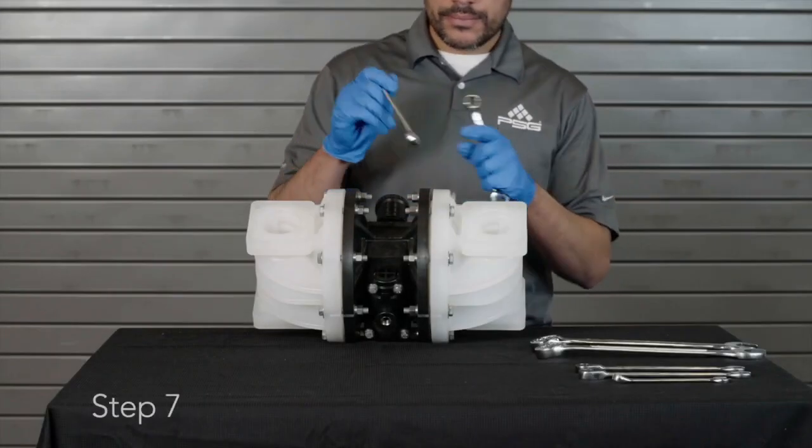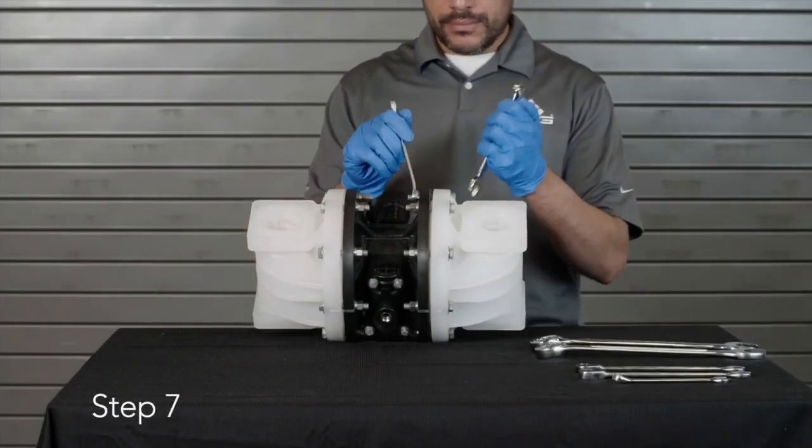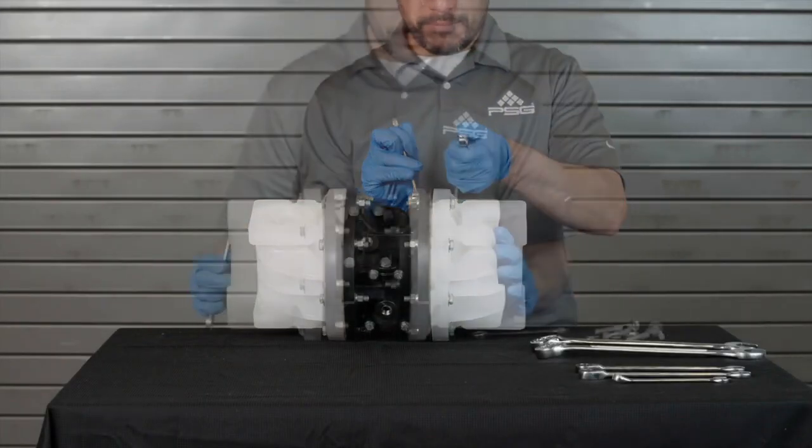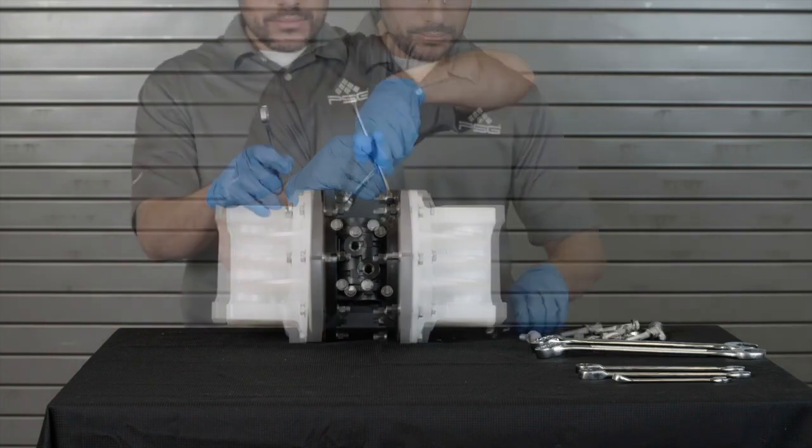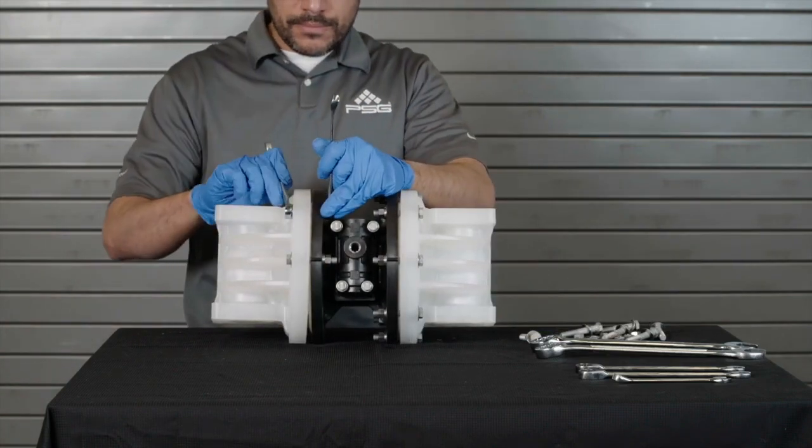Step 7: In order to remove both outer chambers, use the 9/16-inch wrenches, removing the 8 hex cap screws, 16 washers, and 8 nuts from each side.